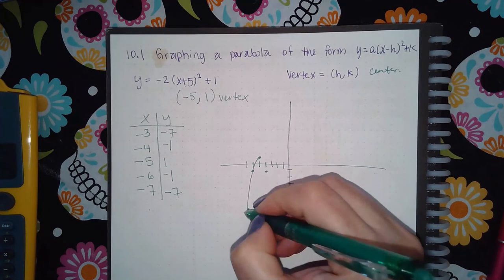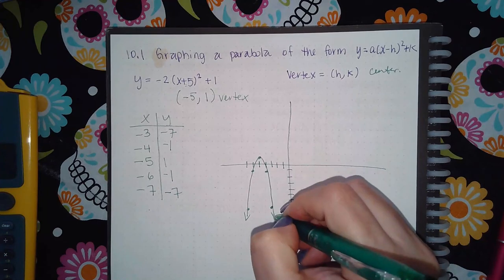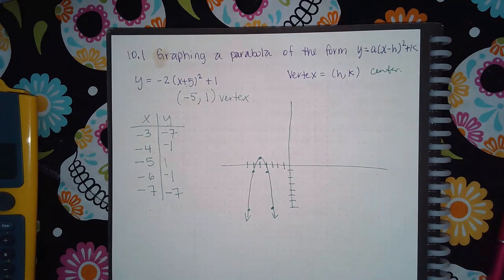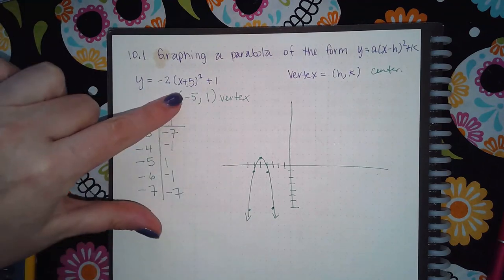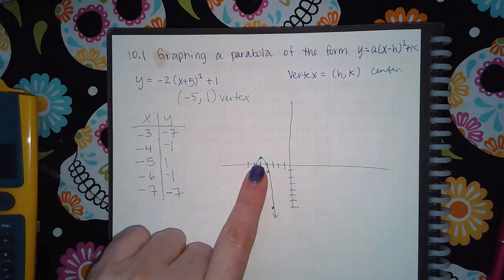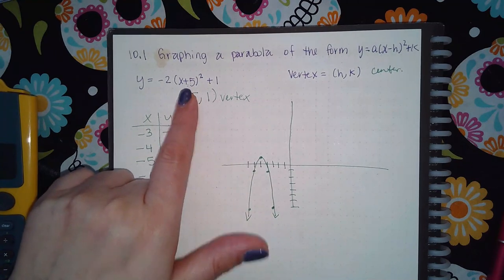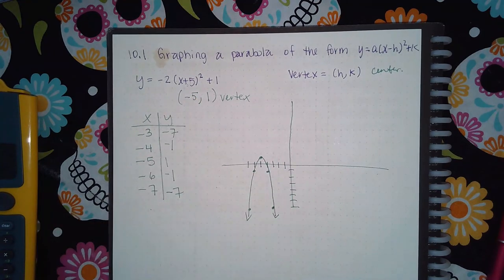And so then if you hit the graphing button, it'll draw the parabola like that. And it makes sense. It's downward because of the negative. It's a little bit more narrow because of the 2, shifted to the left 5 because of the positive 5, and then shifted up 1 because of the plus 1. So it does match all the transformation ideas we've been learning before.